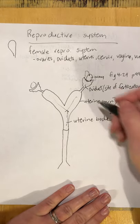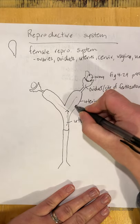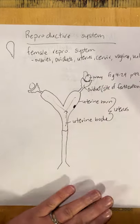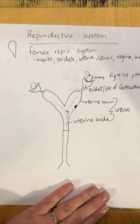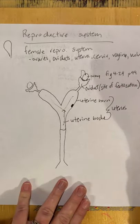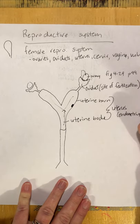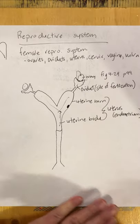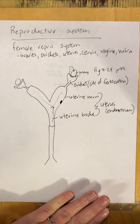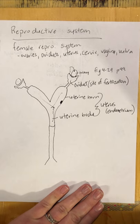Once that embryo has traveled into the uterus it's going to pick a place and implant. It implants into the endometrium. The endometrium is the inner lining of the uterus — it's nice and cozy and cushy for that little embryo to settle in.